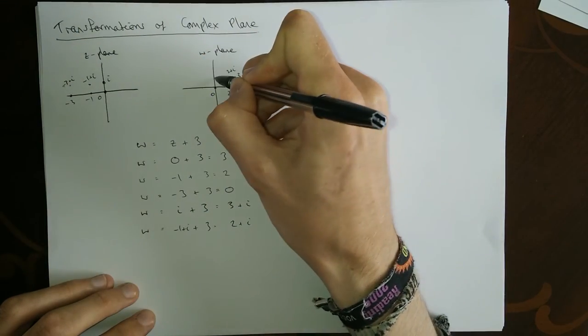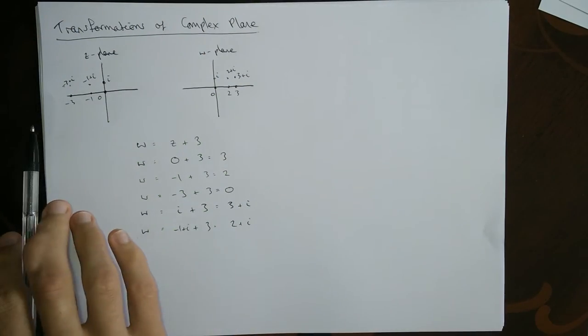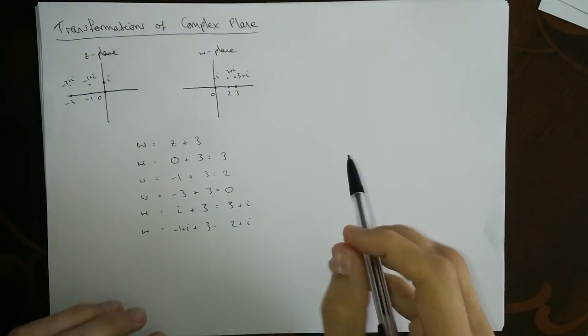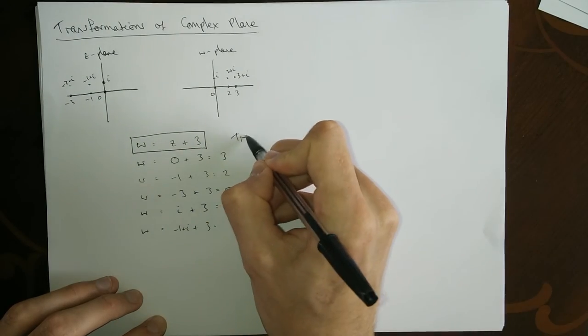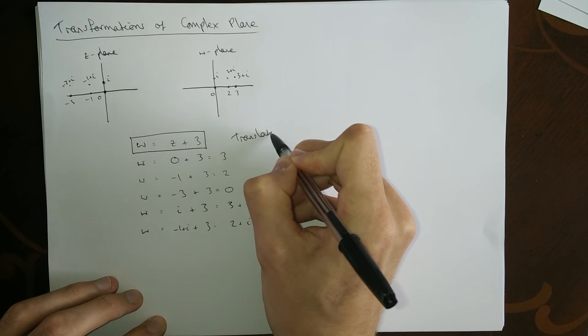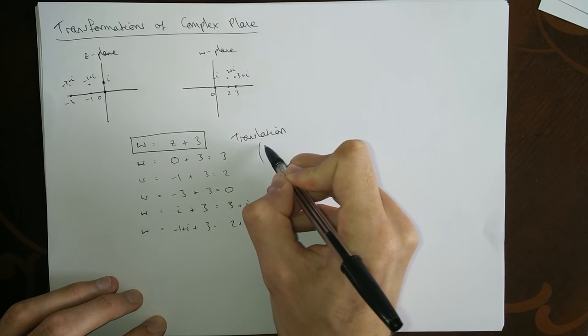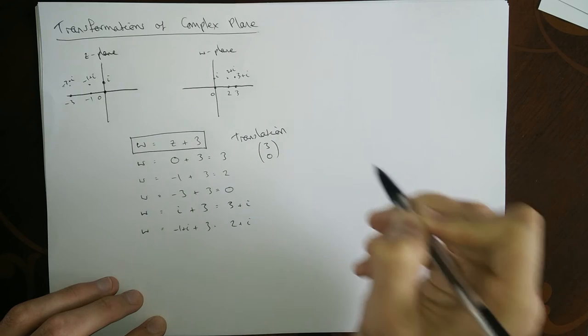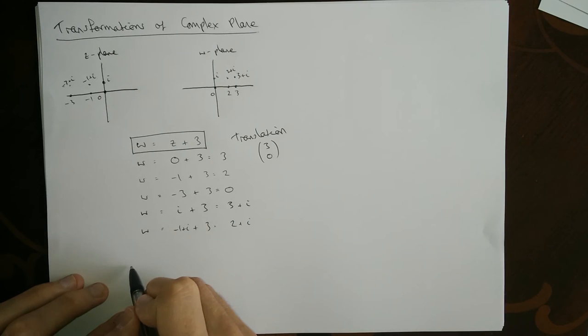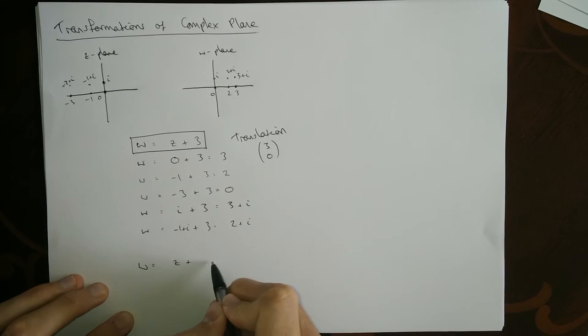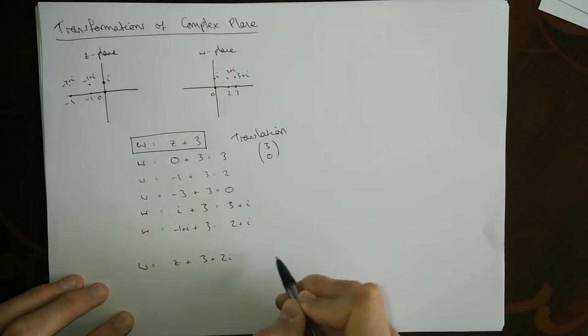Minus three plus i gets mapped to i. In fact what it's doing is every point is being mapped along by three. We recognize that this is indeed a translation. If you're doing it in the old school vector format, it was translating by three in the x direction and zero in the y direction.